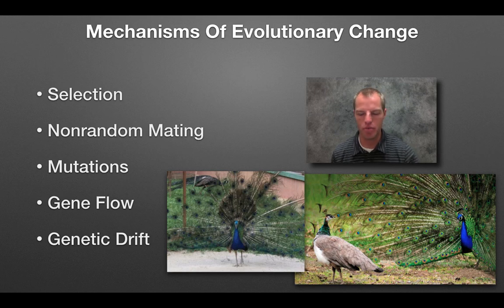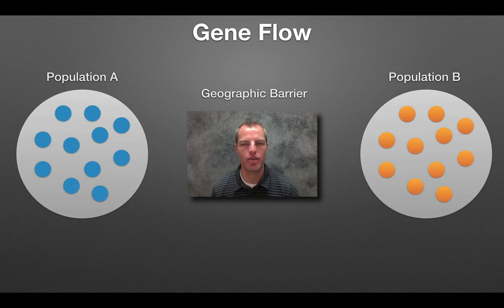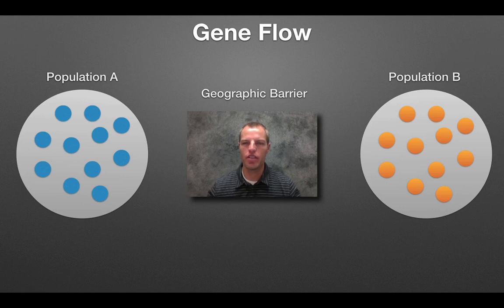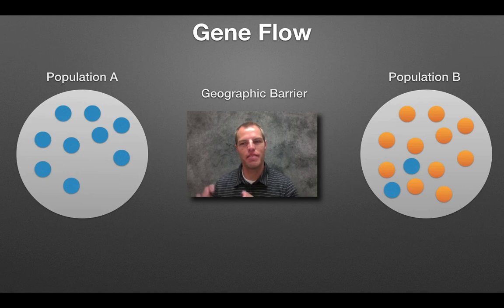The two I want to look at now are gene flow and genetic drift, because those are the ones we haven't really talked about. Gene flow: anytime we have a population separated by a geographic barrier — could be the Grand Canyon, could be a big body of water — those two populations could be the same species, but they're in different locations so they'll evolve a little differently. Gene flow says: what if some genes from one population flow over into the other? If population A flows over into population B, we've just introduced new genes into that population.